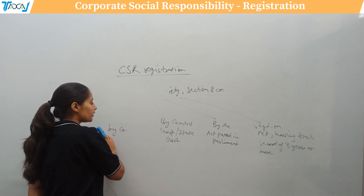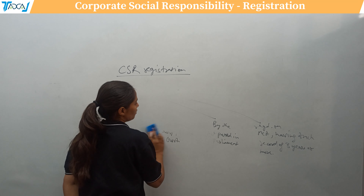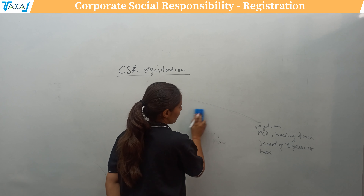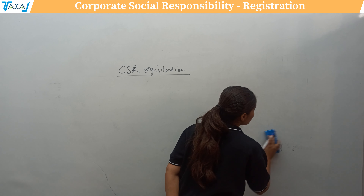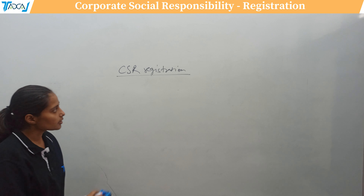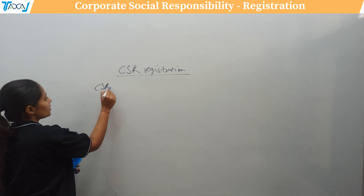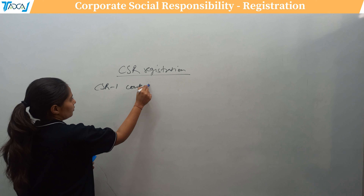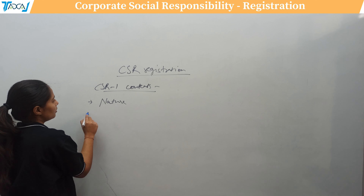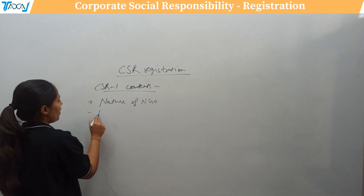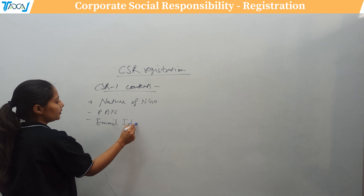Today we are specifically discussing CSR-1 — how it is done, what content it contains, its applicability across establishments, and the requirement that it must be filed before undertaking any corporate funding or CSR activities. The first content item in CSR-1 is the nature of the NGO, including its PAN, email ID, and address.